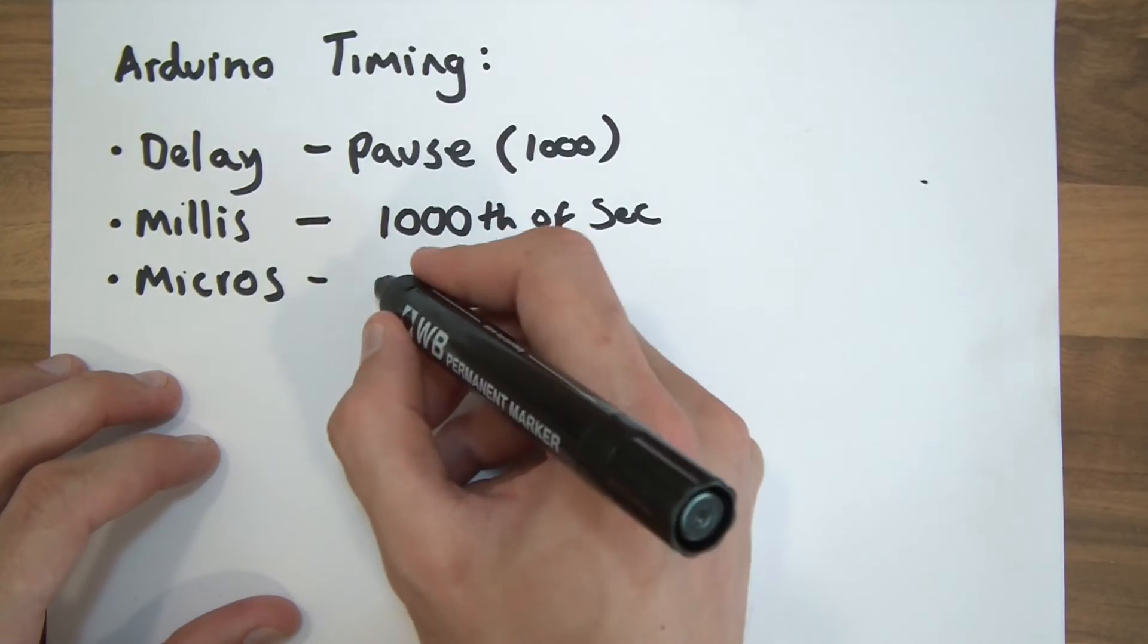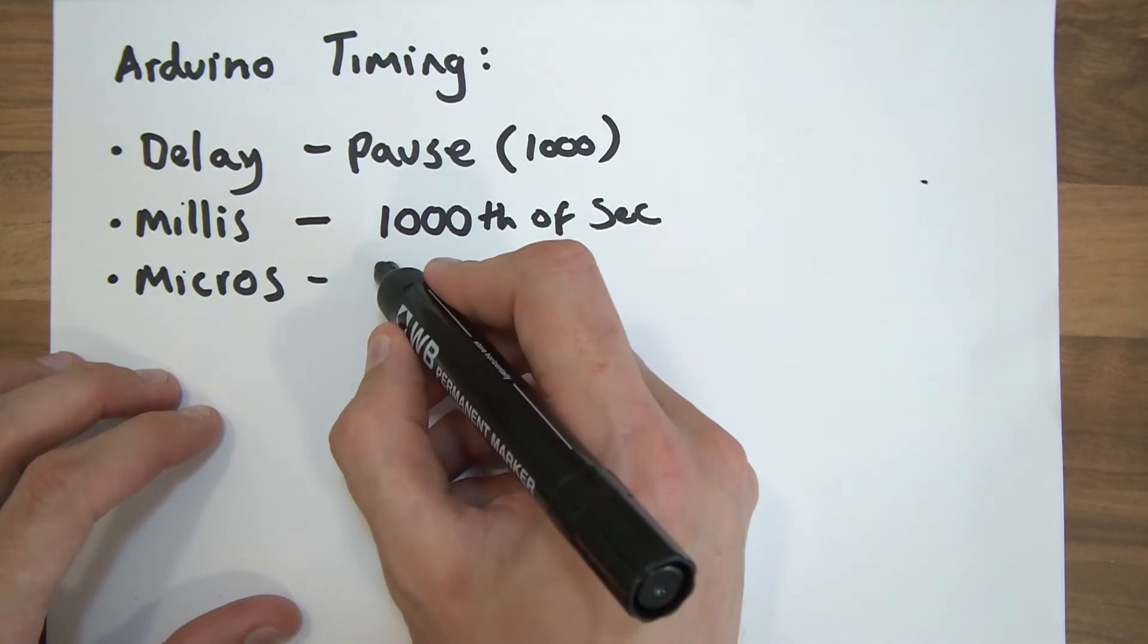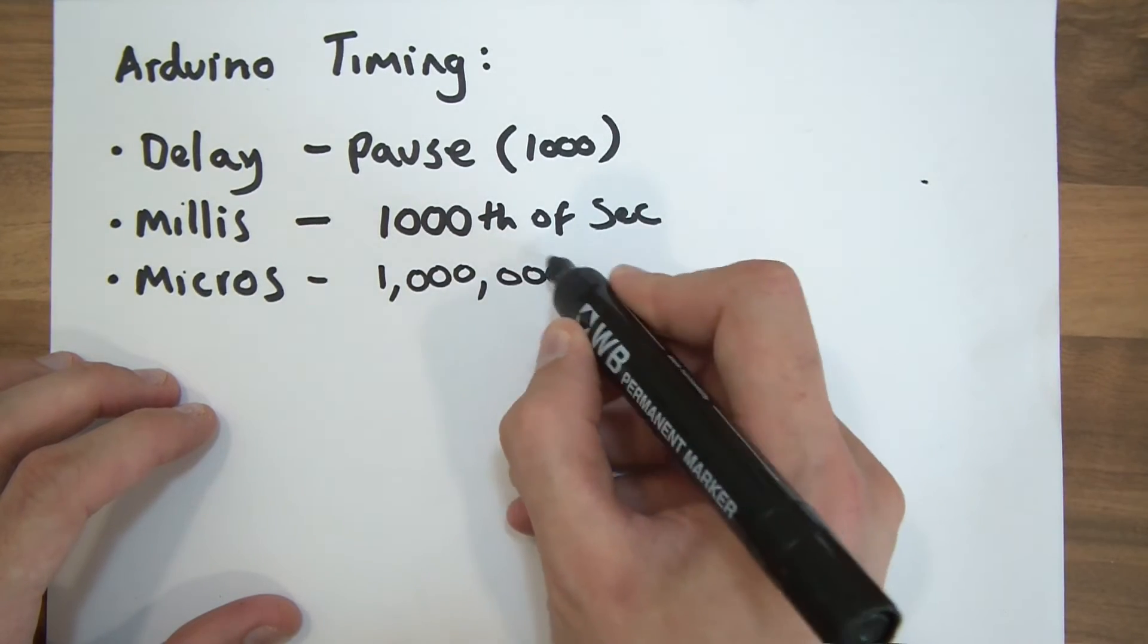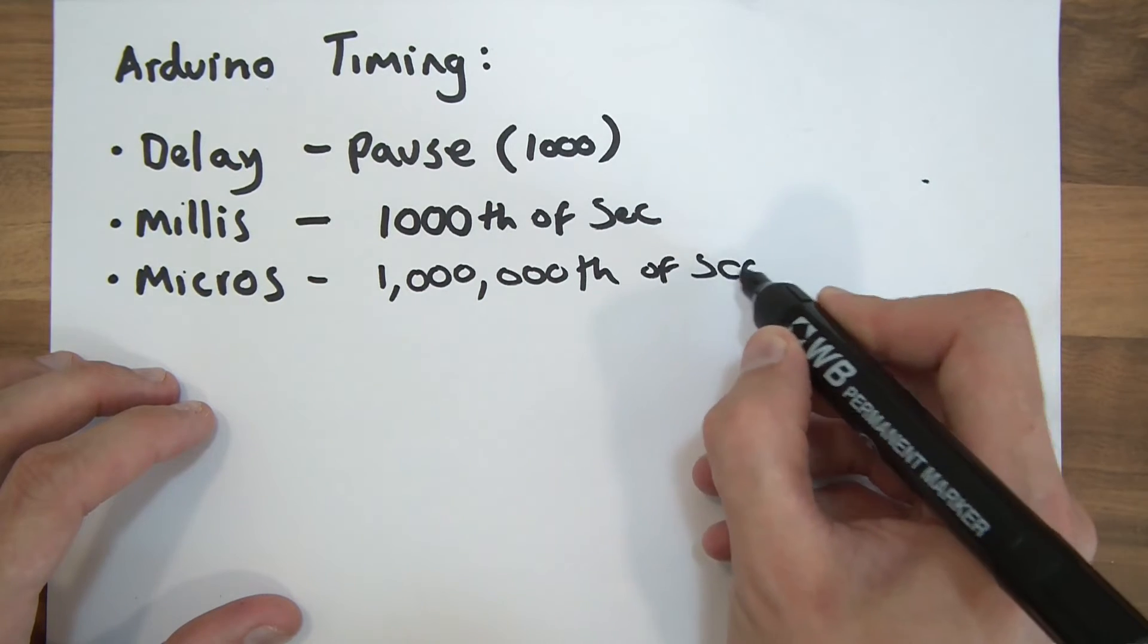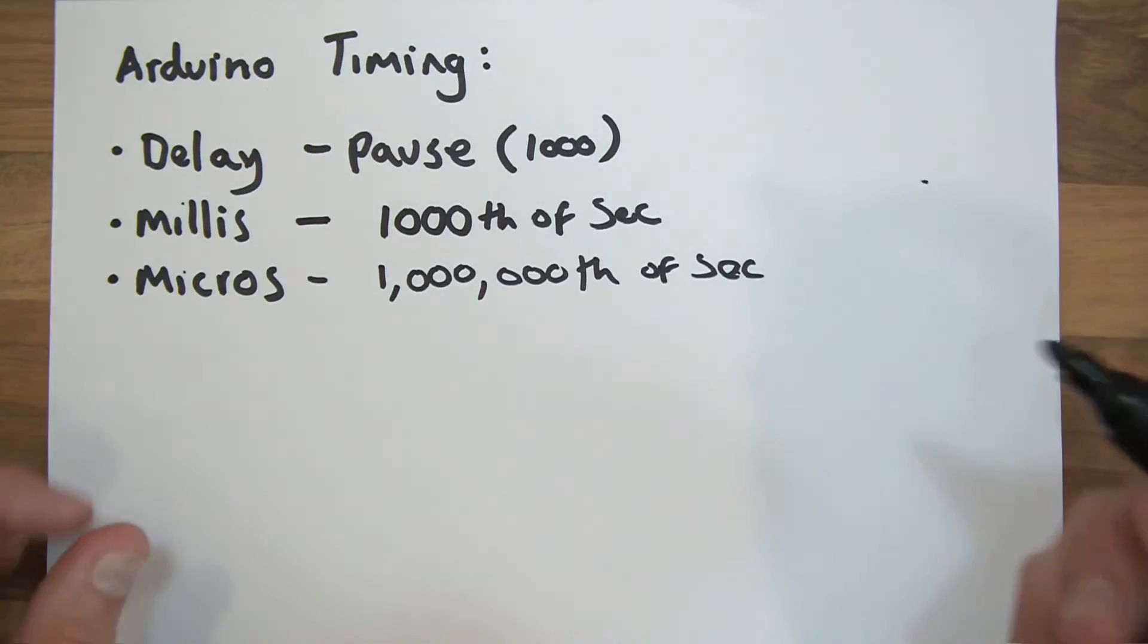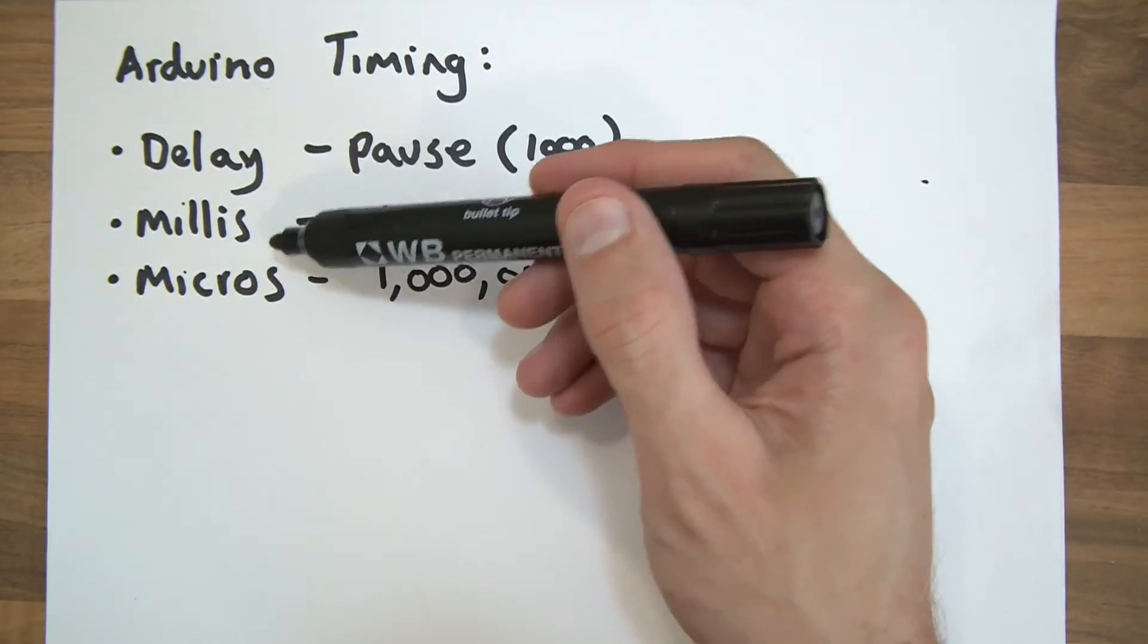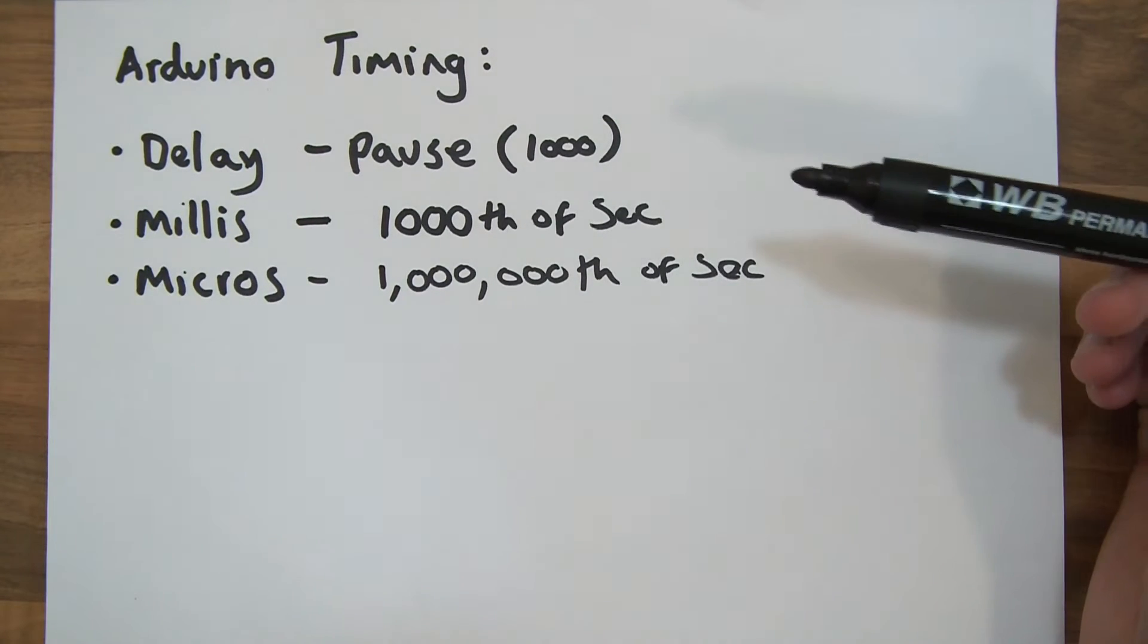And micros is from a Greek word, I think it's mikros or something, which means small. But anyway, that's a millionth of a second. And millis and micros have really useful uses - that sounds a bit silly - but they have really good uses in Arduino.